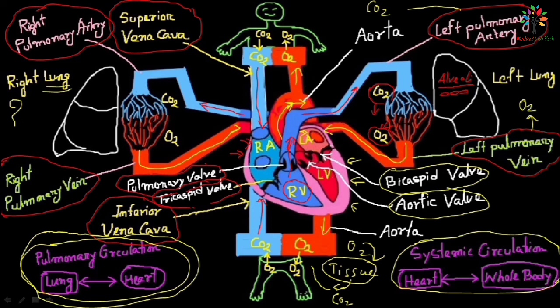There is another artery known as the bronchial artery. The bronchial artery supplies oxygenated blood to the lung tissue — mainly the bronchi and the tiny air sacs. The bronchial artery forms from the aorta. This is all about pulmonary circulation and systemic circulation. Please like, share, and comment, and those who are new to my channel please subscribe. Thank you.